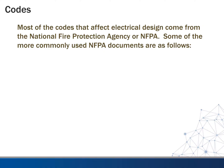So let's talk about codes, especially as they affect electrical design. Probably the primary source for most of the electrical codes comes from the National Fire Protection Agency — abbreviated as NFPA. Some of the more common NFPA documents we utilize in electrical design include, first, NFPA 70. This is probably the primary document we use, and it's referred to as the National Electrical Code. It covers working with wire, conduit, and different installation types.